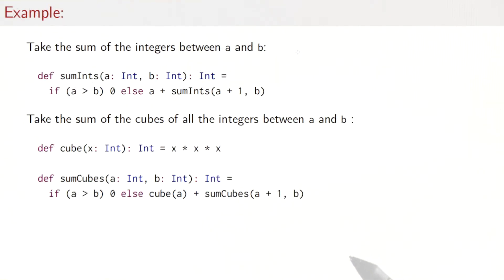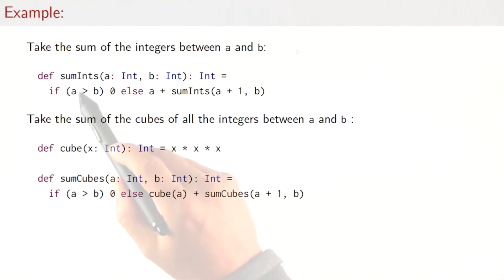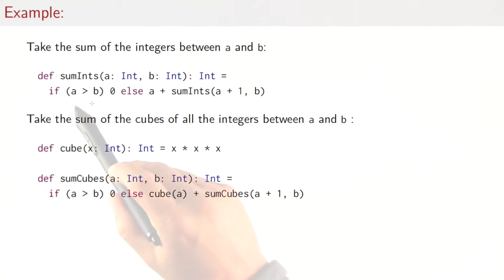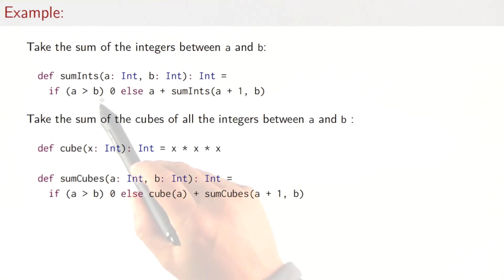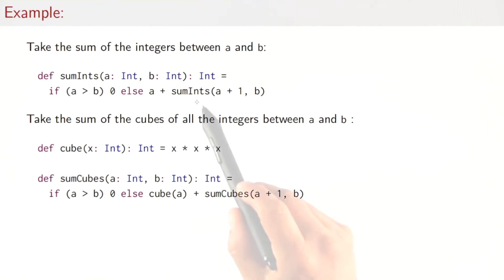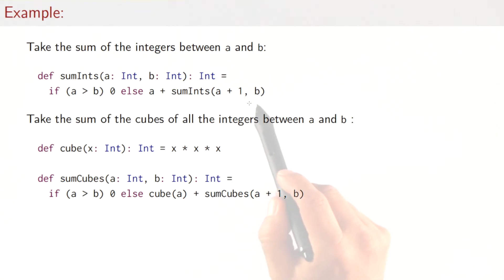Let's see an example. Let's suppose we want to take the sum of all the integers between a and b. We could write something like this. Sum ints takes the bounds as parameters, a and b. If a is greater than b, then there's nothing to sum and we would return zero as the logical value for that.